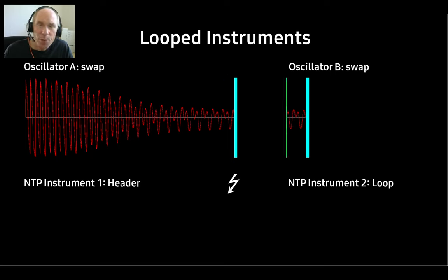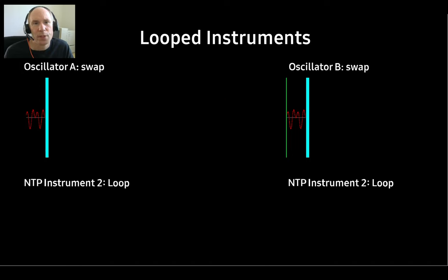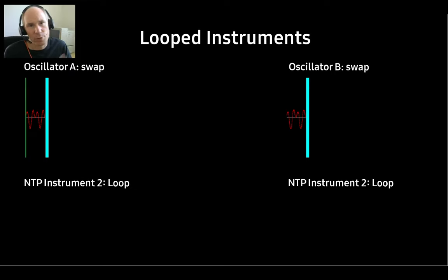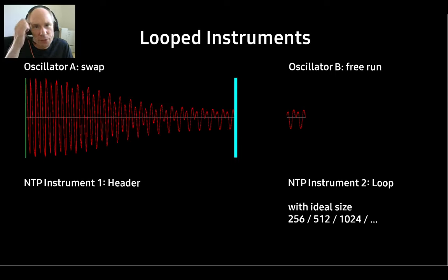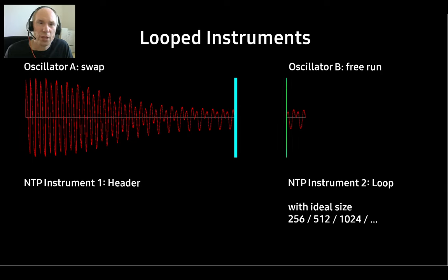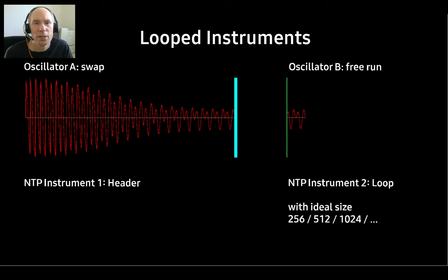When A is done, it starts B and fires an interrupt. We use the interrupt to set up A to play the loop next. During this time, B is playing. Now B is finished and swaps to A, and A is finished and swaps to B — this keeps going and the loop is played endlessly. However, if the loop is of an ideal size like 256 or 512 bytes, we can have B in free run mode. So A swaps to B and B plays the loop endlessly on its own. This is way better — it doesn't require an interrupt and it also sounds better.